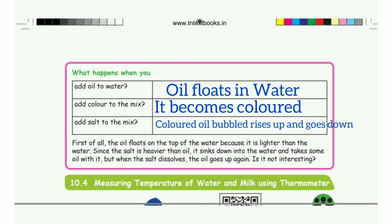What happens when you add oil to water? The answer is oil floats in water. Add color to the mix — it becomes colored. Add salt to the mix — the color and oil separate and the clouds go down.